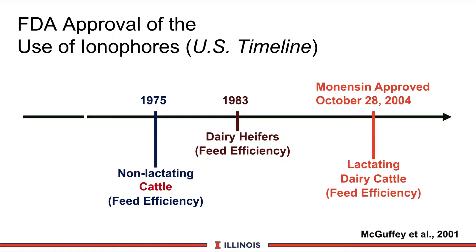Illustrated on the next PowerPoint is the FDA approval process of ionophores in the United States. You can see that dairy milk cows was approved very late — October 28th of 2004 — so this is a relatively new feed additive for lactating dairy cows.